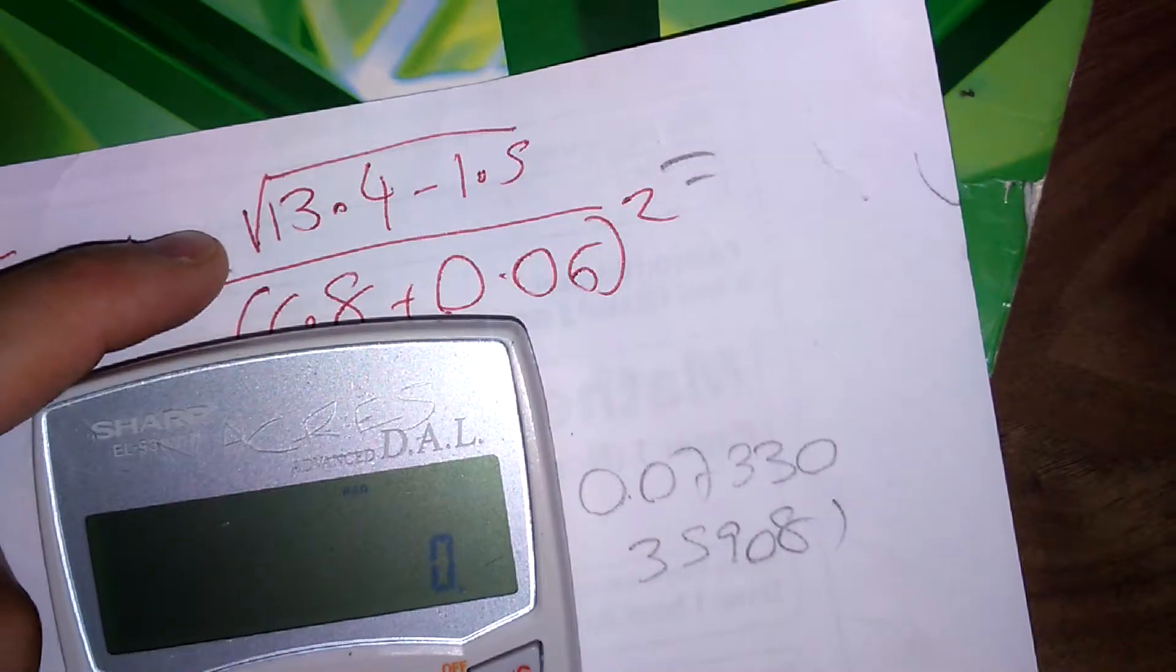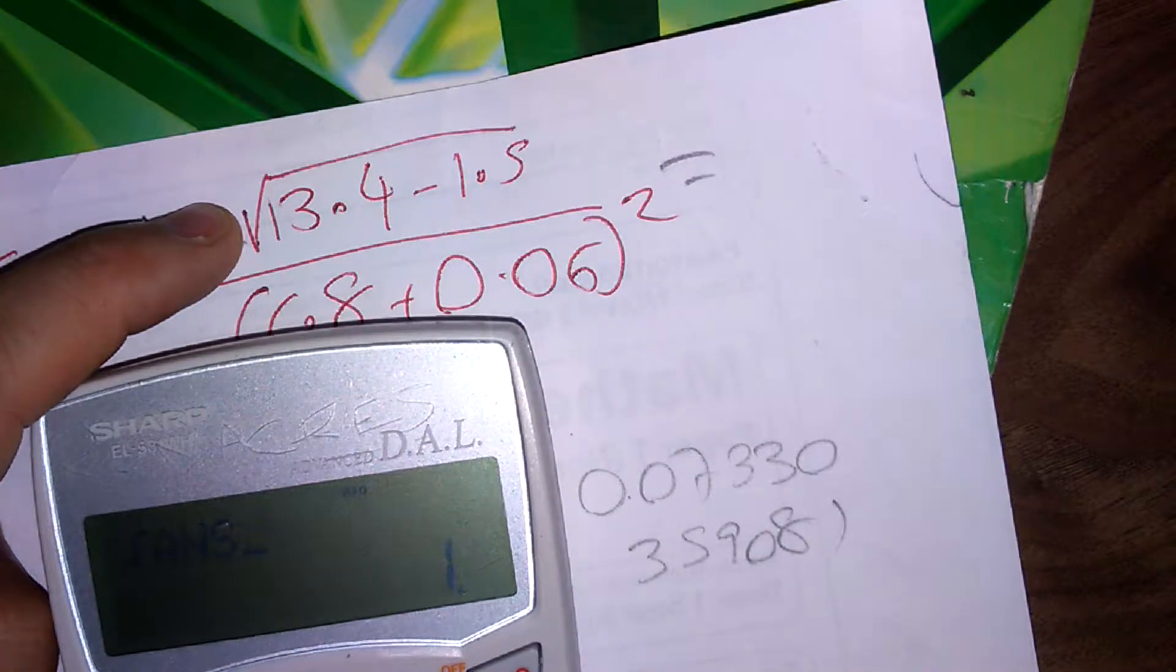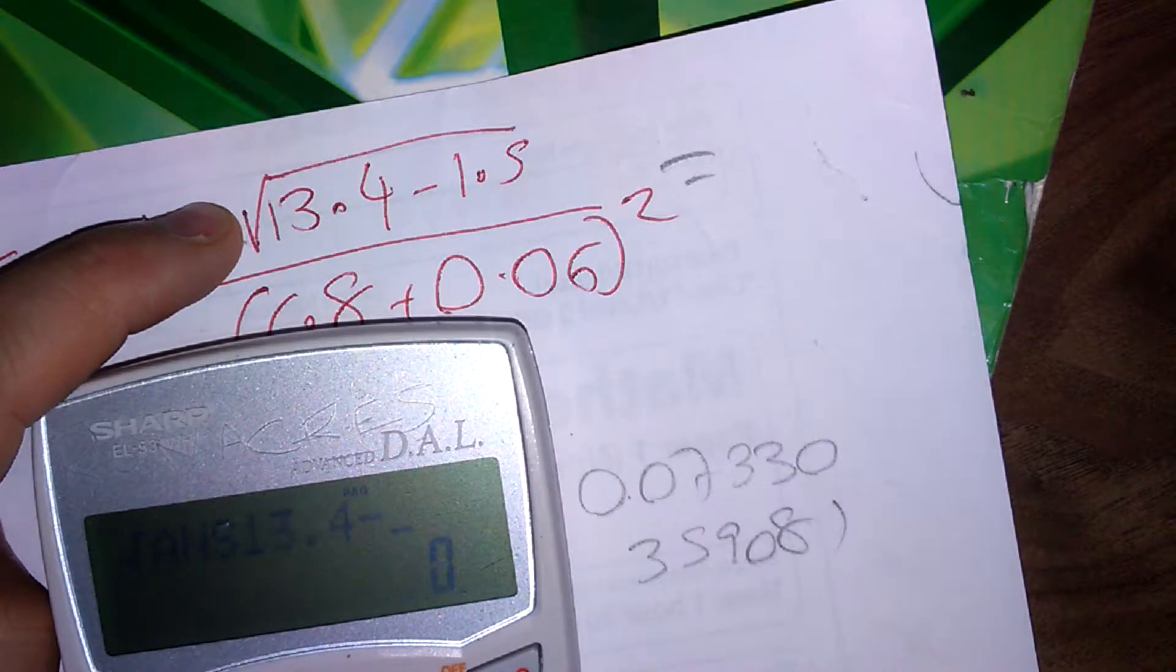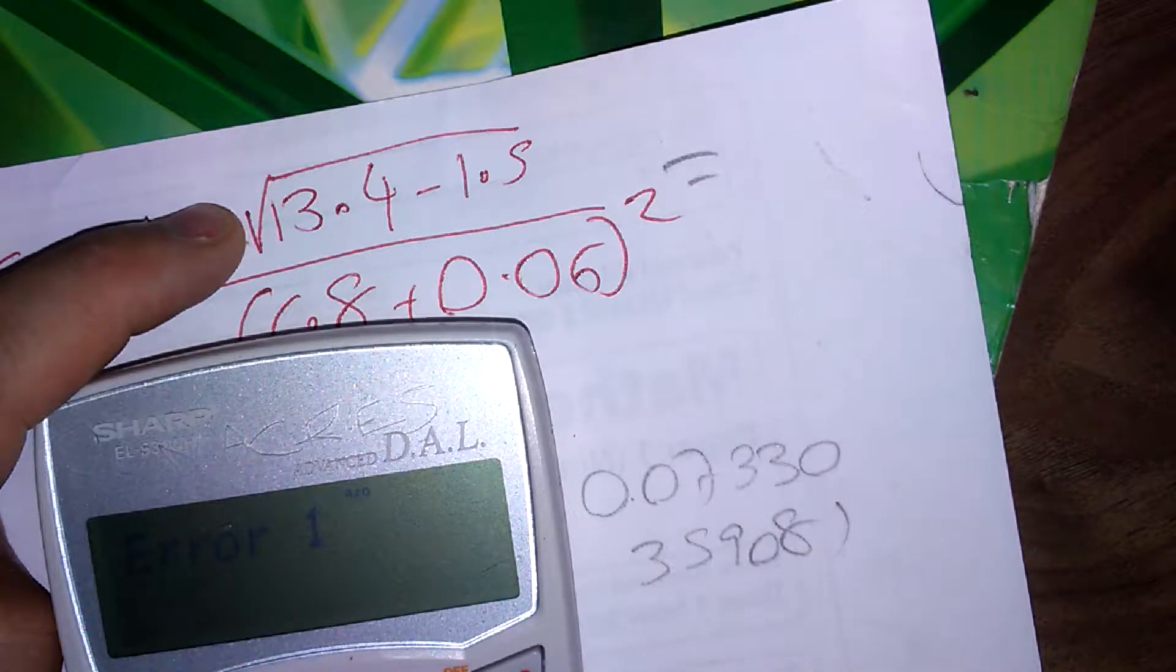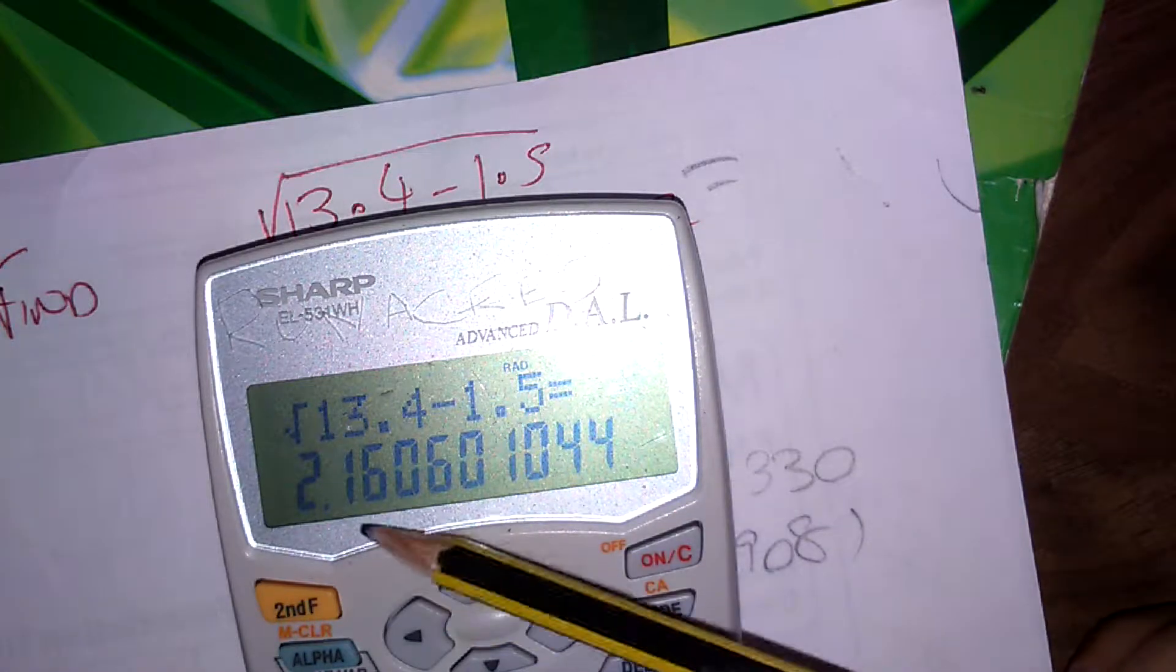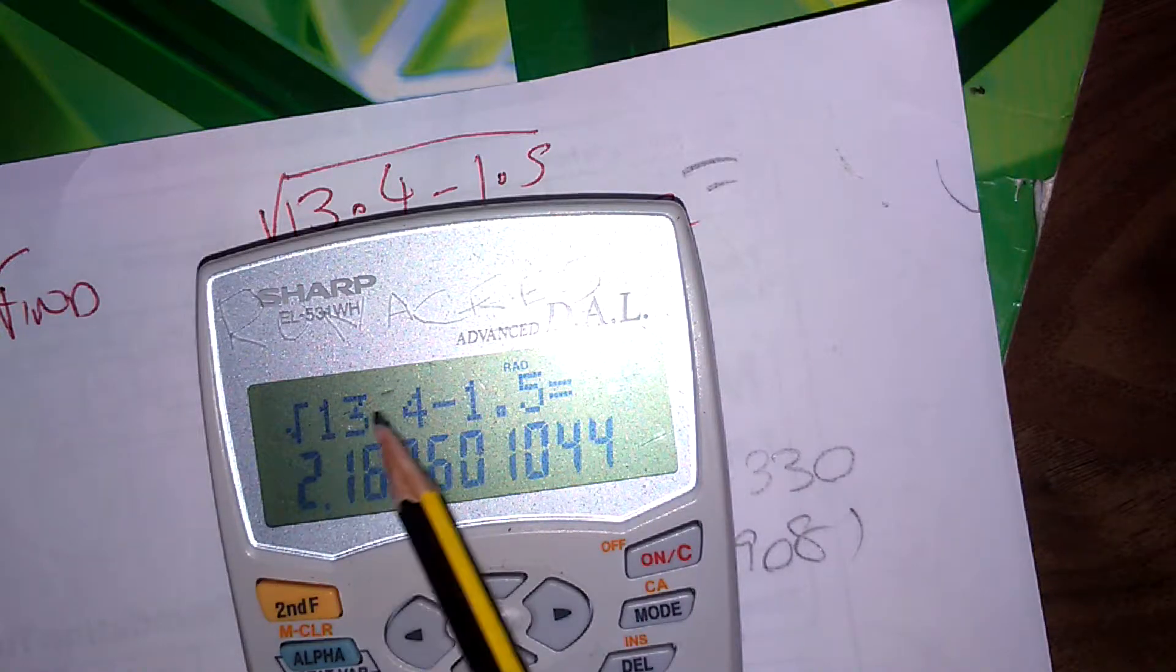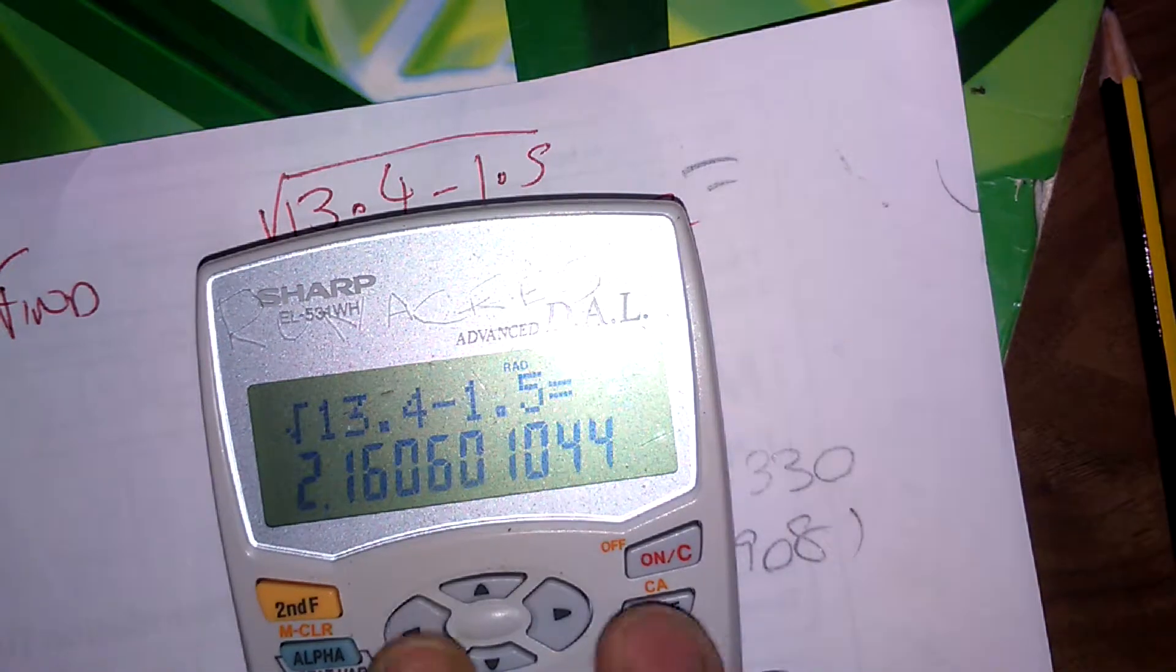First, let's type in the numerator, which is the square root of 13.4 minus 1.5. If you've got this answer 2.16, this is not right, because your square root is just on the 13.4, it's not on the 1.5.